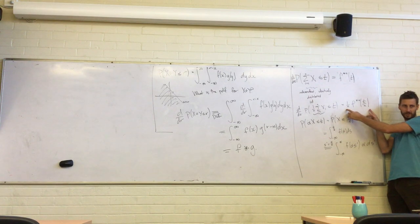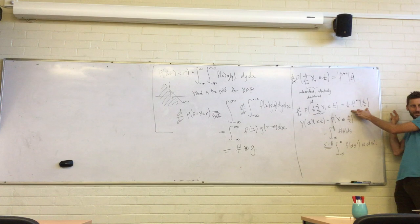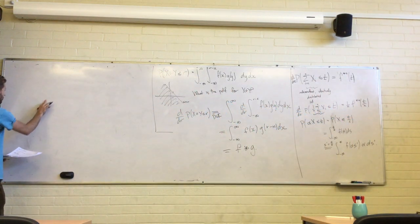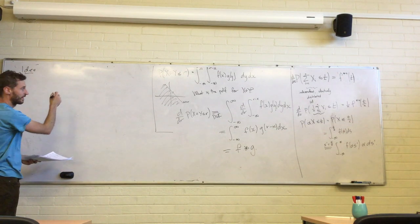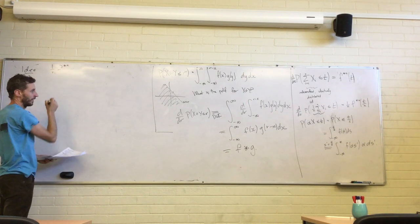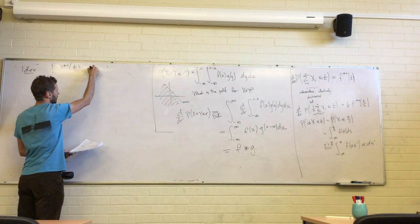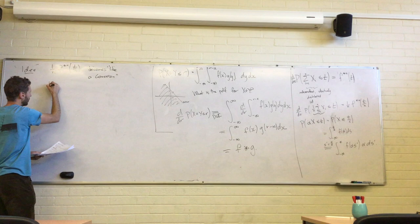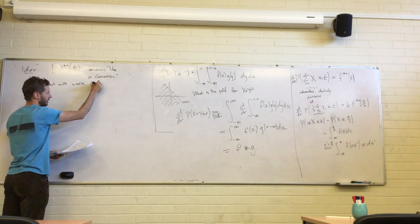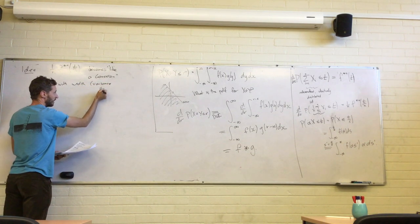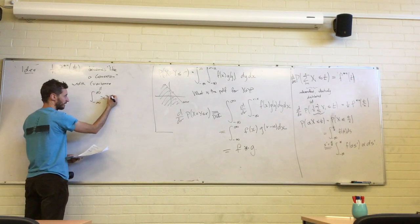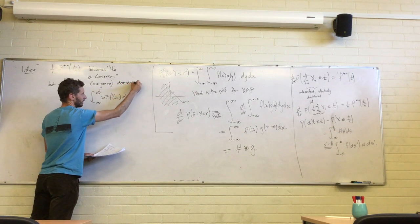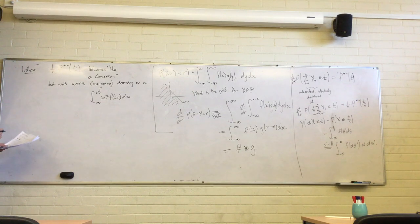So it's a little bit hard to say directly that this thing converges to something, because as n changes, the thing it's getting closer to changes too. We need to do a little normalization first. The idea is that the convolution power gn, evaluated at t over sqrt(n), becomes like a Gaussian, but with variance — the second moment of the PDF.